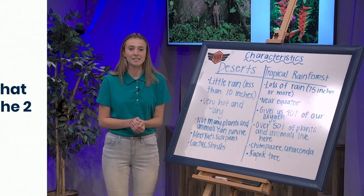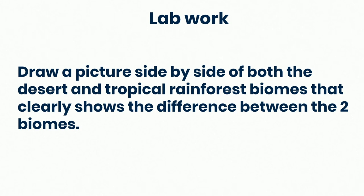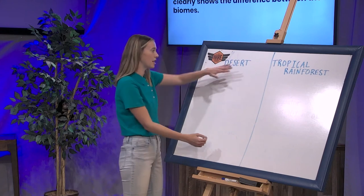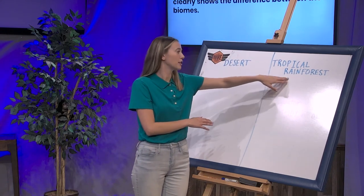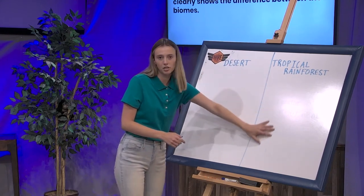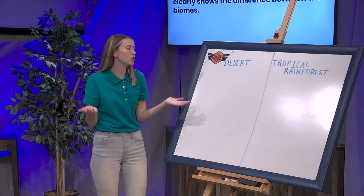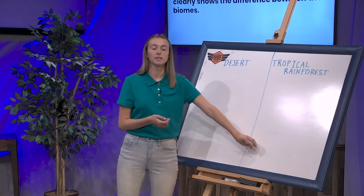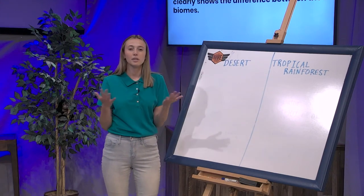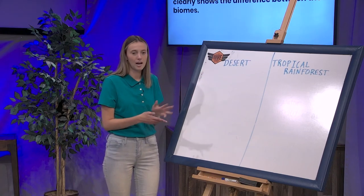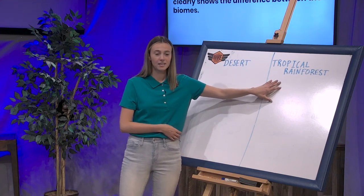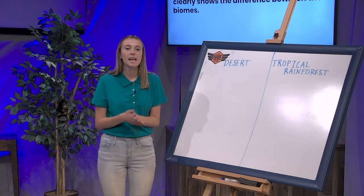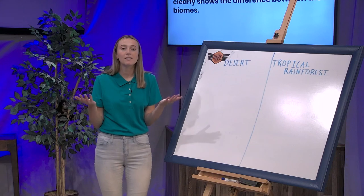For your lab work today, you're going to be drawing a picture of a desert and a tropical rainforest biome. Split your paper in half — on top of one half write 'desert,' the other half write 'tropical rainforest' — and draw a picture of each. You want to clearly show the differences between the characteristics of a desert and the characteristics of a tropical rainforest through drawing, not writing. For example, are you going to have a lot of green in the desert? Probably not. Use your notes to do your lab work. After you finish, take a picture and send it to us at Pathways, and we can feature you in a future show.